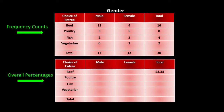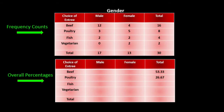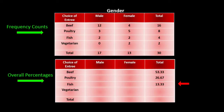Next are the poultry entrees. There are 8 people who ordered poultry, so 8 divided by 30 gives us 26.67 percent. Next we have the people who ordered a fish entree — 4 out of 30, so 4 divided by 30 gives us 13.33 percent. And finally we have those who ordered a vegetarian meal, that would be 2 out of 30, so 2 divided by 30 gives us 6.67 percent.